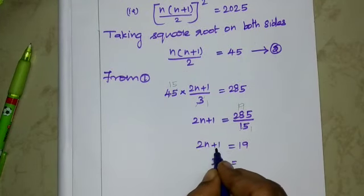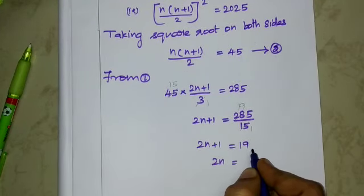So 2n+1 = 19, therefore 2n = 18, and n = 18/2 = 9. The answer is n = 9. So the first 9 natural numbers satisfy both conditions. Final answer is n = 9.